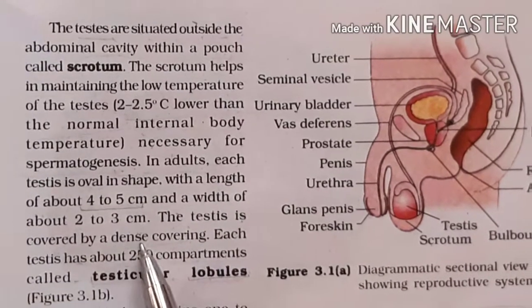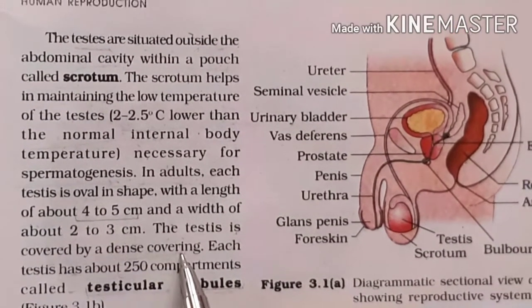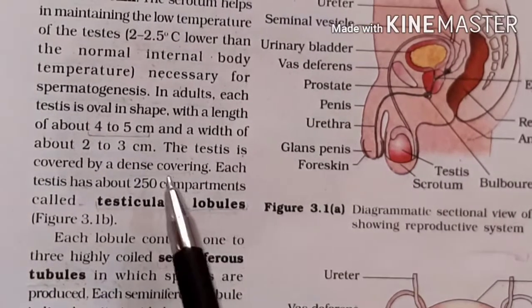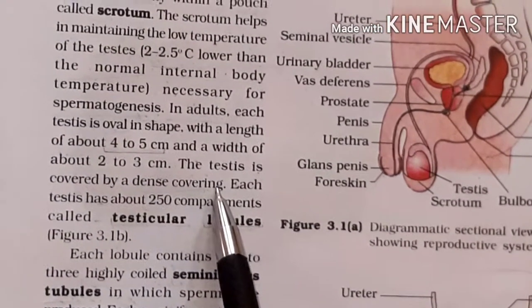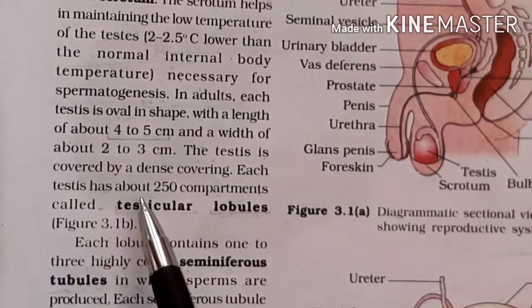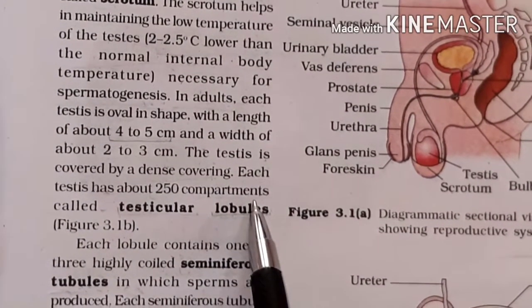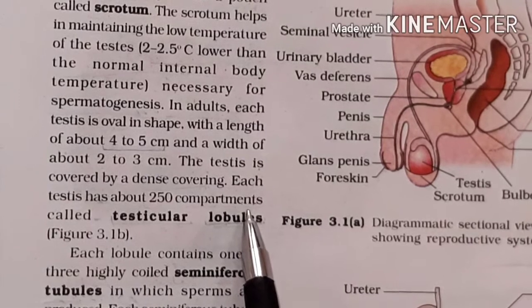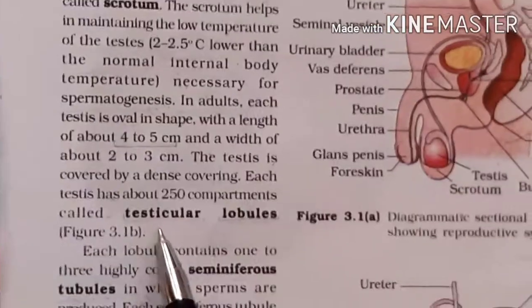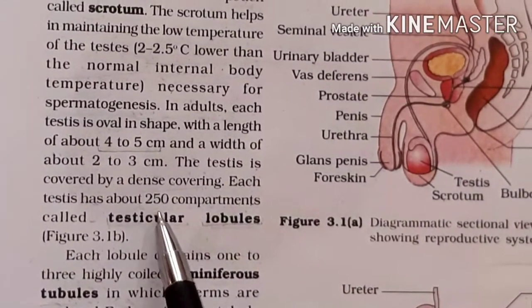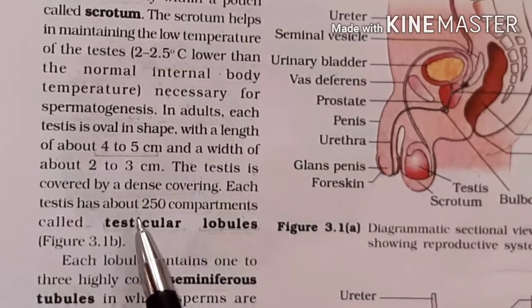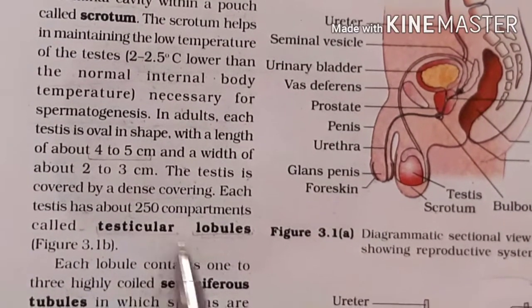The testis is covered by a dense covering called tunica albuginea. Each testis has about 250 compartments — box-like structures called testicular lobules. There are 200 to 250 such testicular lobules.